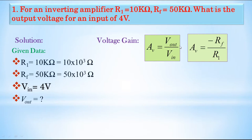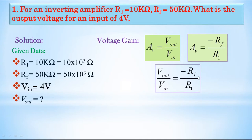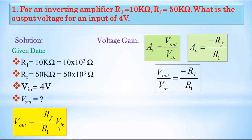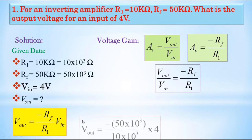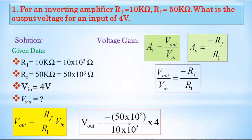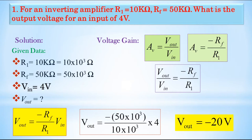To calculate Vout, we rearrange: Vout equals minus RF divided by R1 into Vin. Substituting the values — minus 50 into 10 power 3 divided by 10 into 10 power 3, multiplied by 4 — we get minus 5 into 4, which equals minus 20 volts. Therefore, the output voltage Vout is minus 20 volts.